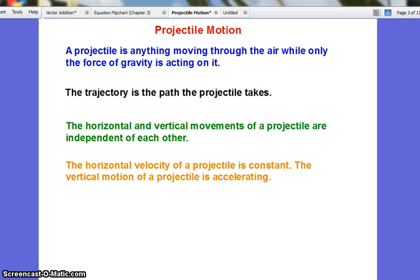The horizontal velocity of a projectile is constant, whereas the vertical motion is accelerating, just like we learned before with freefall.